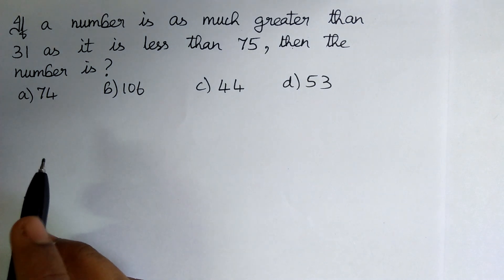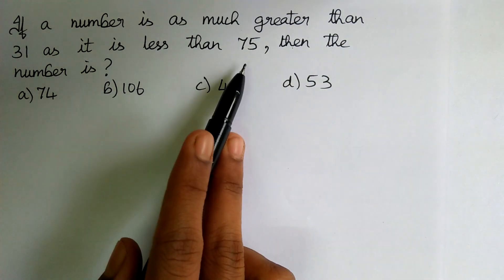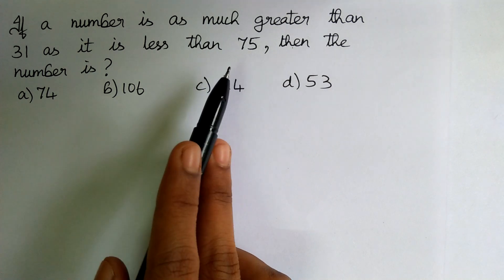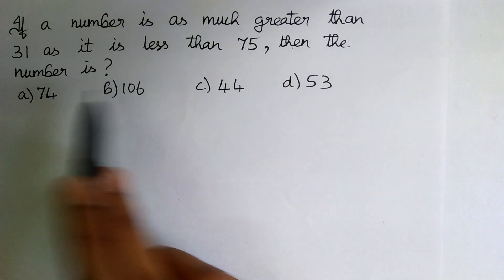Therefore, it is equidistant from the two boundaries 31 and 75 and so is the average of the two numbers.